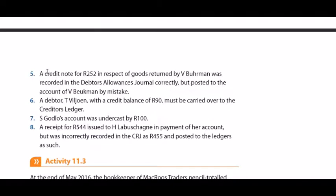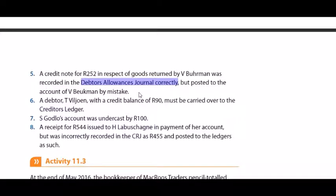Adjustment 5: A credit note for 252 Rand in respect of goods returned by V Berman was recorded in the DAJ correctly but posted to the account of V Biekman by mistake. The DAJ is fine; the only problem is it was taken to the wrong debtor. To fix this, we take it out of one debtor's account and put it in another. This is a correction of error done in the general journal. So if it was posted to the wrong debtor, it will affect both the general journal and the list.